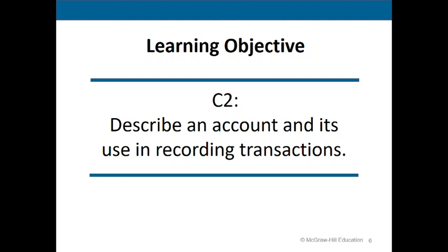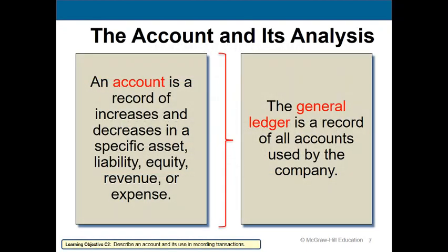Objective two is to describe an account and its use in recording transactions. An account is a record of increases and decreases in a specific asset, liability, equity, revenue, or expense. The general ledger is a record of all accounts used by the company.